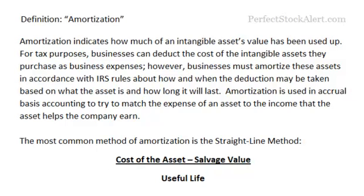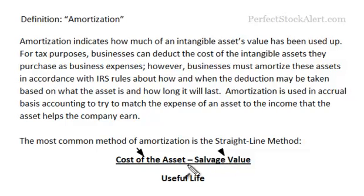The most common method of amortization is the straight-line method. The formula uses the cost of the asset — total cost — subtract any salvage value. Typically when you're talking about amortization and intangible assets, you're not going to have a salvage value, so it'll be zero. That leaves you with the cost of the asset, which you divide by the useful life of the asset.